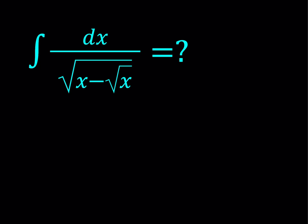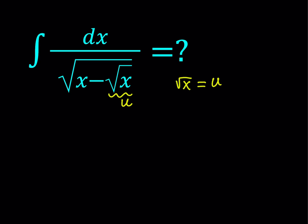We're going to be using substitution, but along the way you're going to see some interesting math. There are a couple of ways to go about it. When we have radicals we tend to call them u and then just go with the u-substitution. But it's very important what you pick as your u. In this case I'm going to look at the innermost radical, and I'm going to call that expression u. So basically the substitution is: square root of x is equal to u.